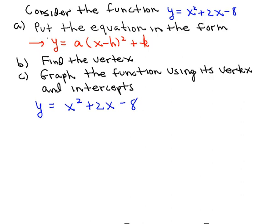But what happens if we're given an equation in the form like what you see at the top here in blue, which is y equals x squared plus 2x minus 8? How do we find the vertex and the axis of symmetry for that kind of equation?